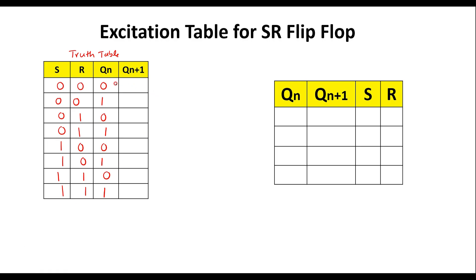In the SR flip-flop: when S=0, R=0, there is no change, so the next state follows the present state. When S=0, R=1, the flip-flop resets to 0. When S=1, R=0, the flip-flop sets to 1. When both S=1 and R=1, the state is undefined — these are invalid states in the SR flip-flop.